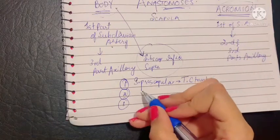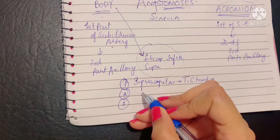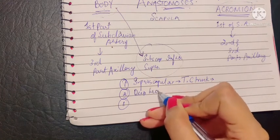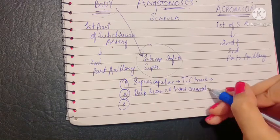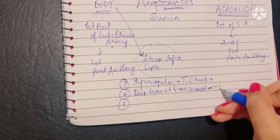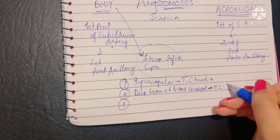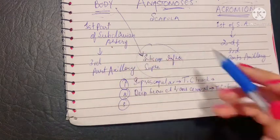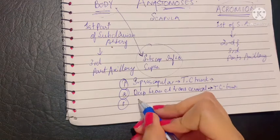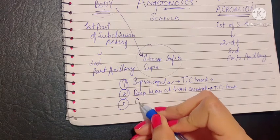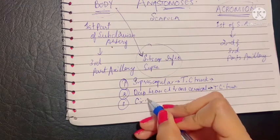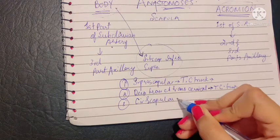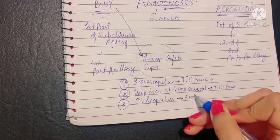The second branch forming the anastomosis around the body of the scapula is the deep branch of the transverse cervical artery, which is a branch of the thyrocervical trunk — again a branch of the subclavian artery. Finally, the third is the circumflex scapular artery, which is a branch of the subscapular artery, which is a branch of the third part of the axillary artery.